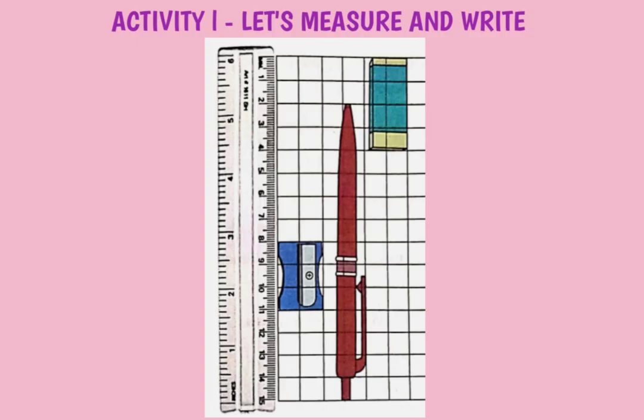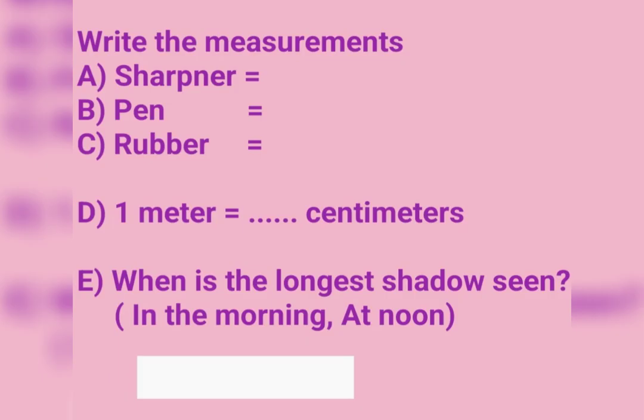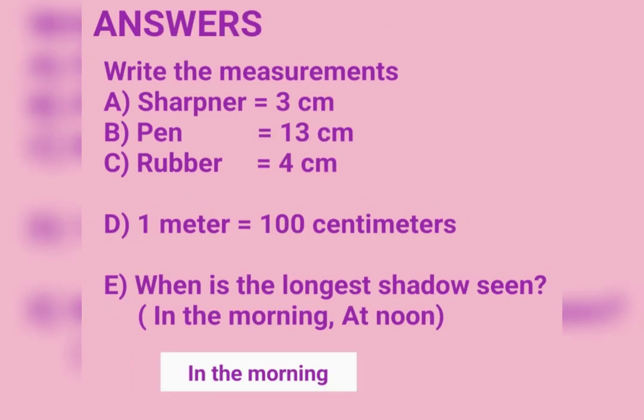Activity 1: Let's Measure and Write. Write the measurements of: A. Sharpener, B. Pen, C. Rubber, D. 1 meter is equal to how many centimeters, E. When is the longest shadow seen — in the morning or at noon? Answers: Sharpener 3 cm, Pen 13 cm, Rubber 4 cm, 1 meter is equal to 100 cm. The longest shadow is seen in the morning.